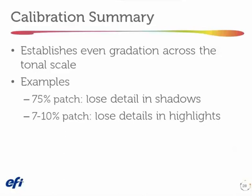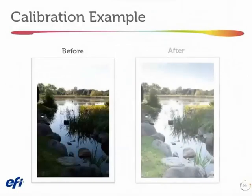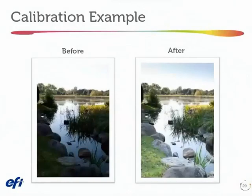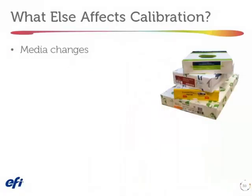To summarize, calibration establishes even gradation. A visual example of the 10% and 75% patch shows before and after calibration results — we've really opened things up. We haven't necessarily gotten the color right yet, but we've established consistency.